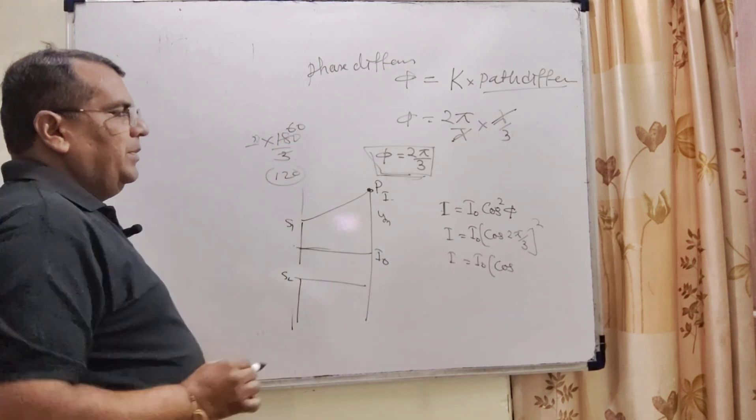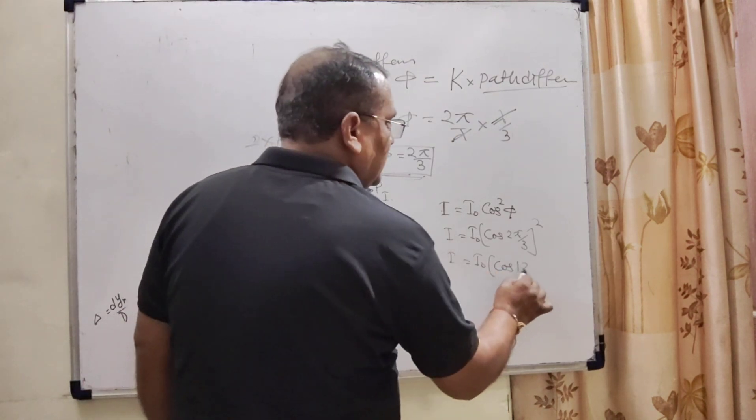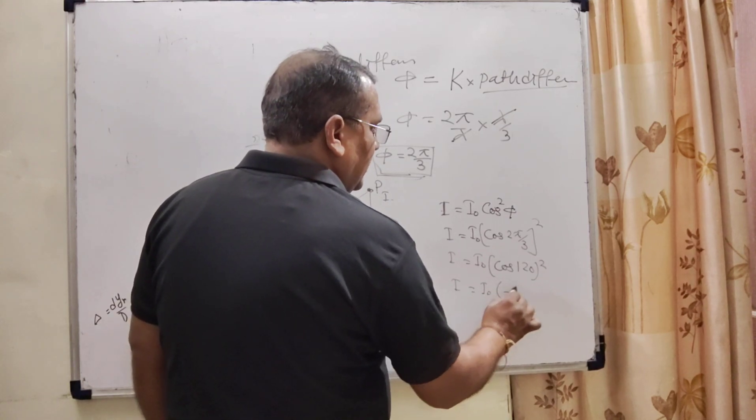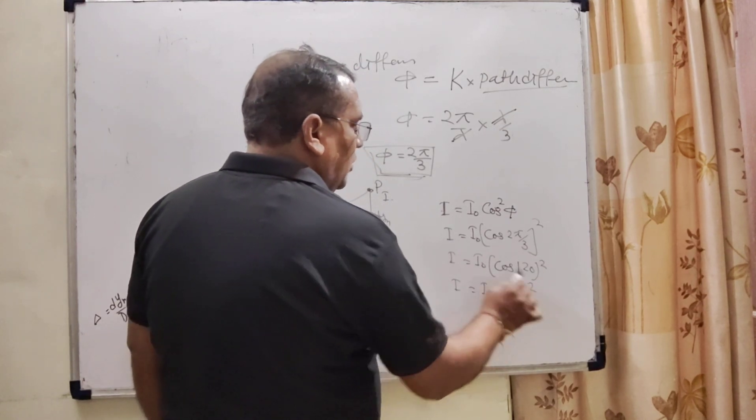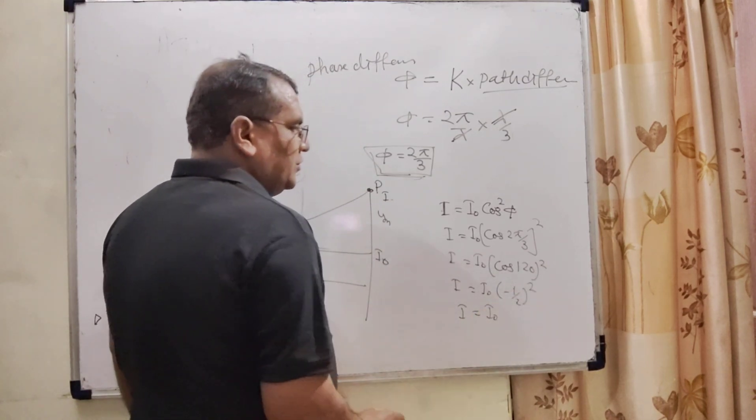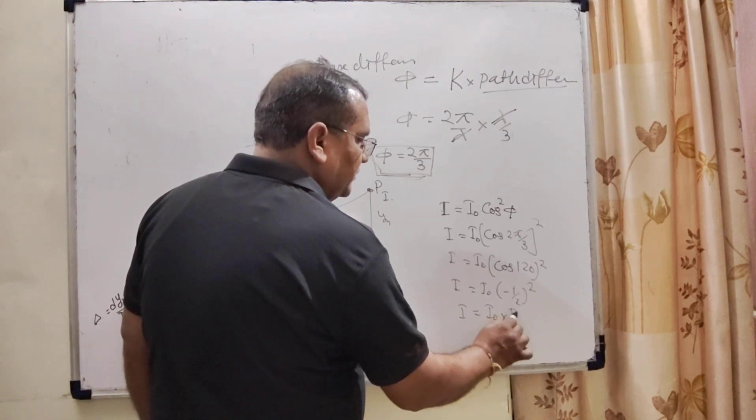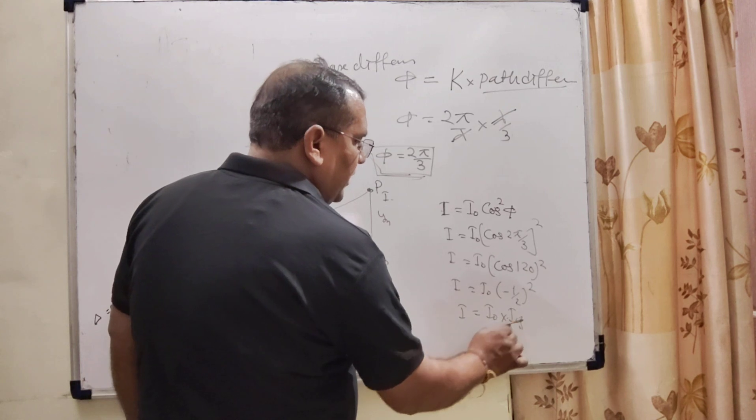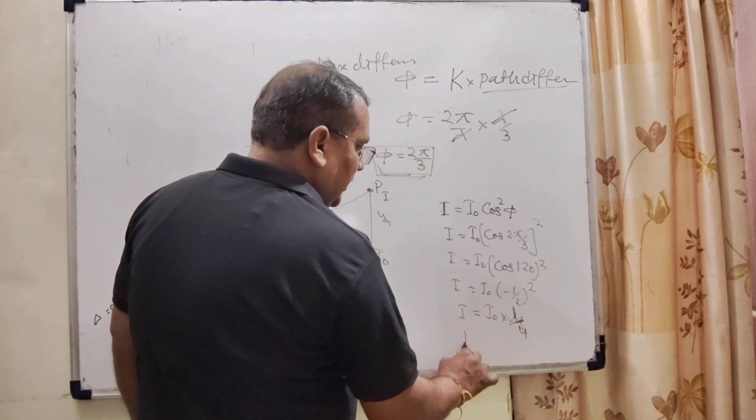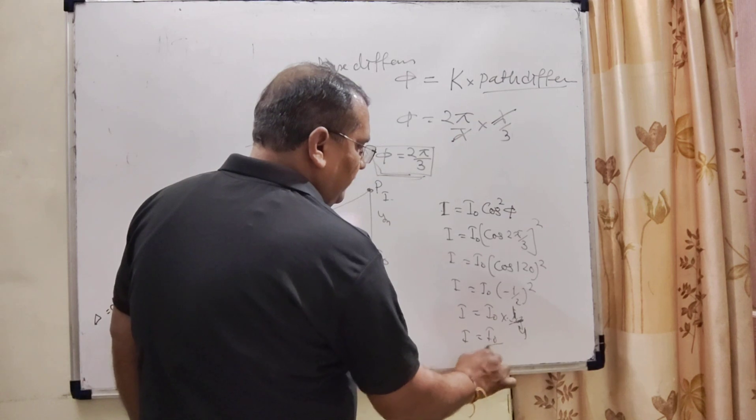So that is 120, and what is the value of cos 120? Minus 1 by 2, whole square. So here I0 and 1 by 2 square, that is 1 by 4. So here I equals I0 by 4.